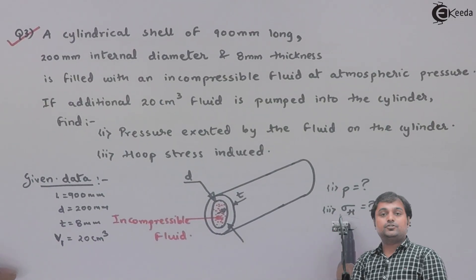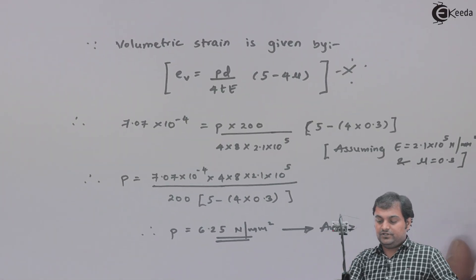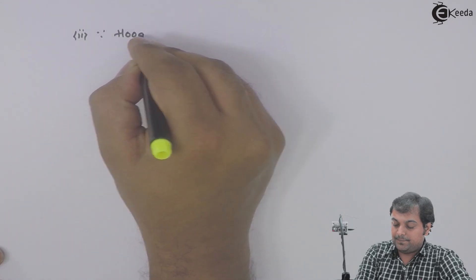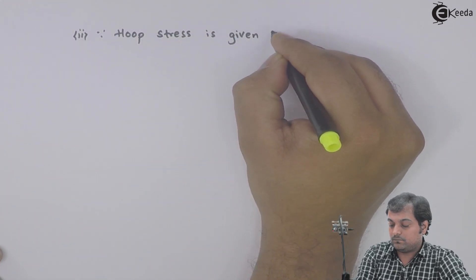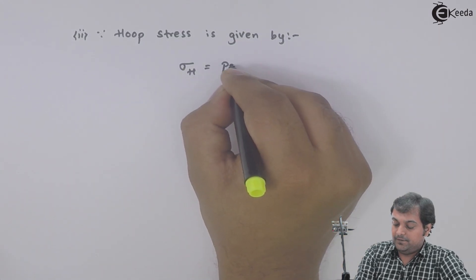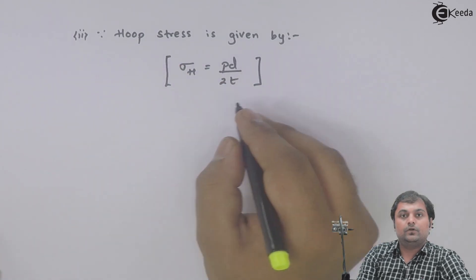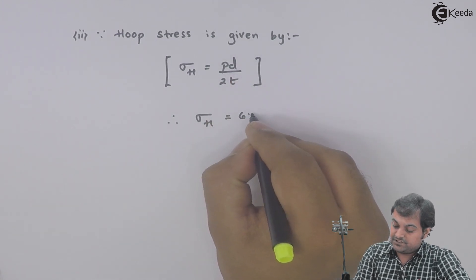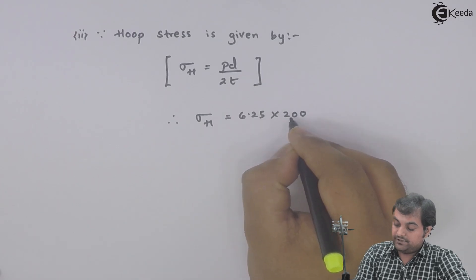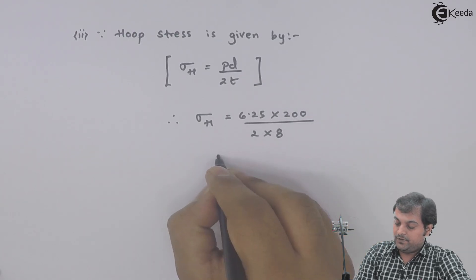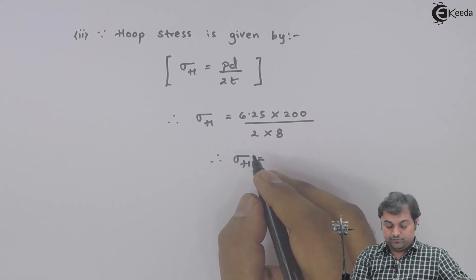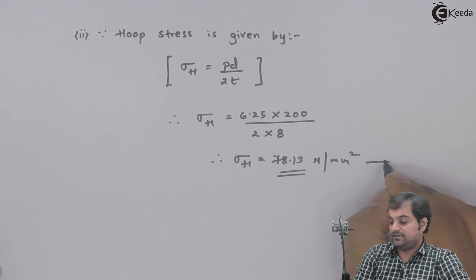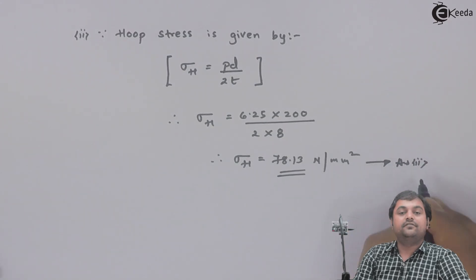For the second question, hoop stress (circumferential stress) is given by σ_h = PD / (2t). Therefore hoop stress = 6.25 × 200 / (2 × 8) = 78.13 N/mm². This is the second answer, and with this we complete the question.